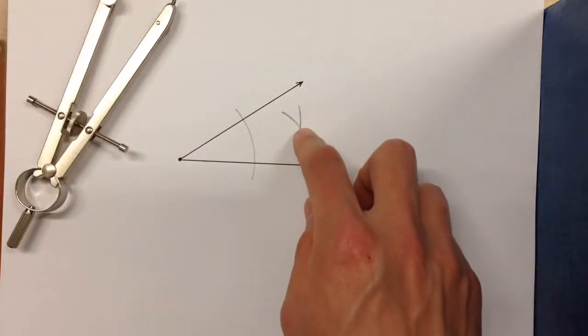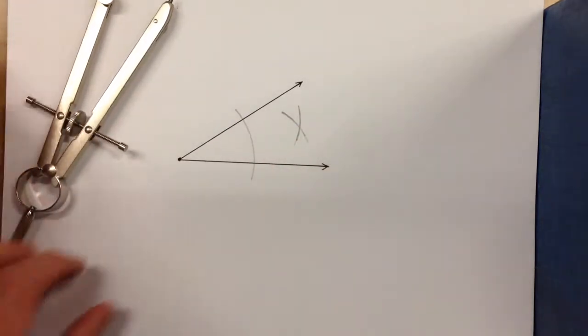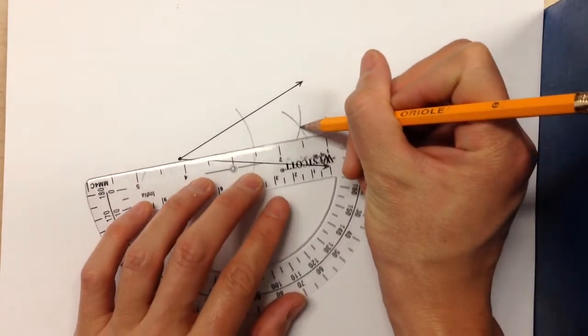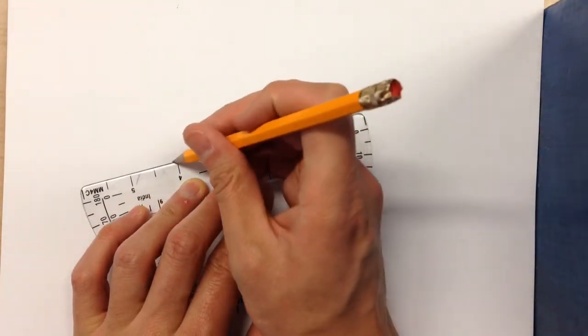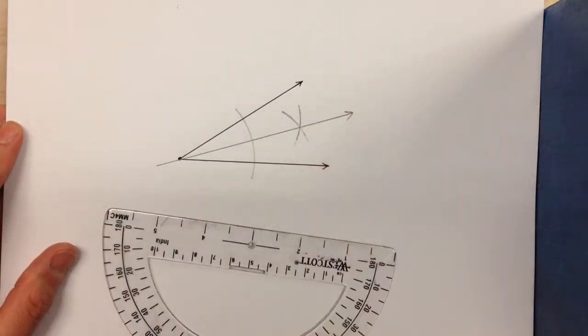And since this point is equidistant from this and that, and I know the angle bisector is going to go through the vertex itself, I know that is my angle bisector.